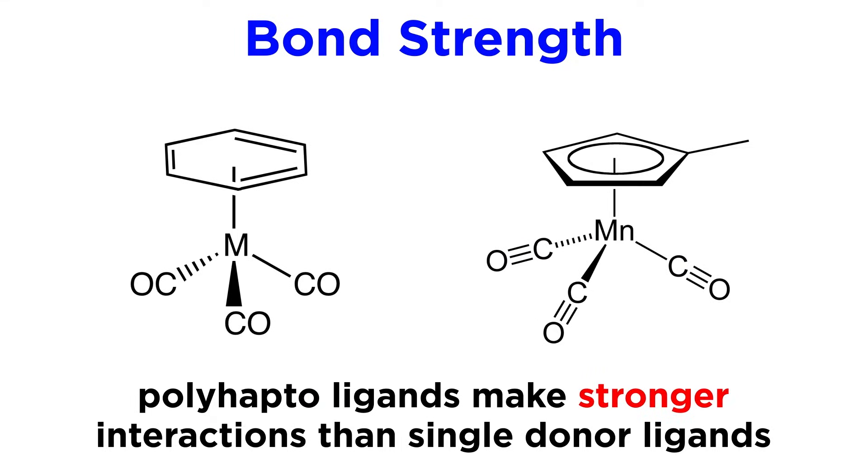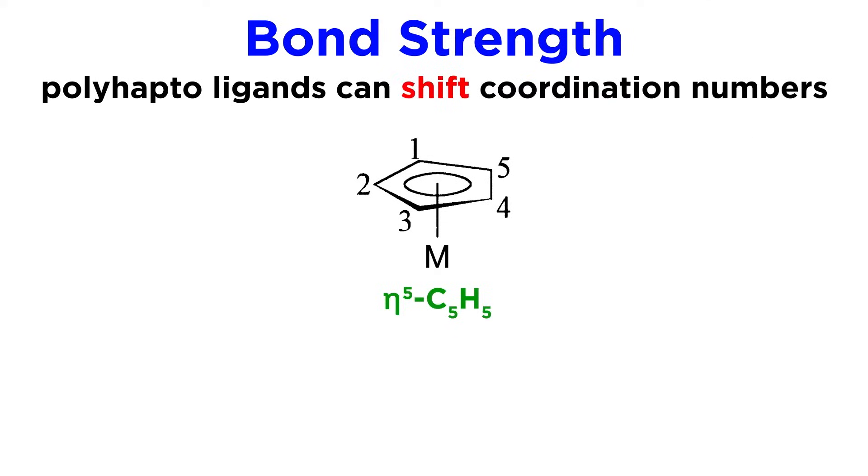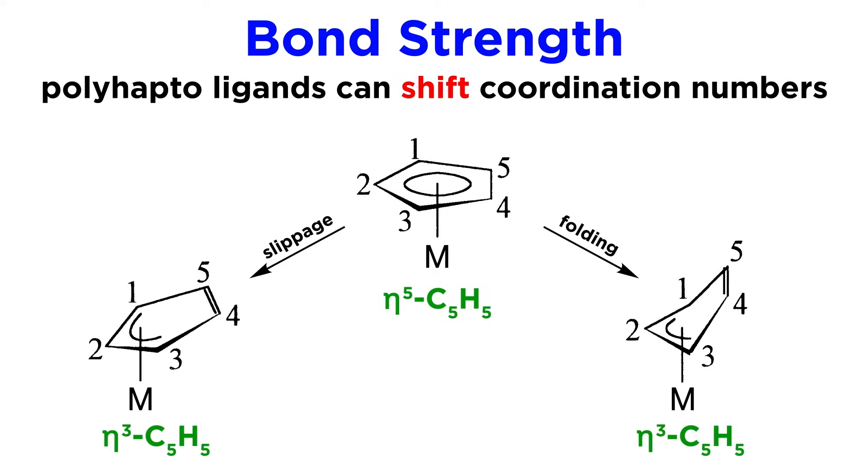In addition, polyhapto ligands like benzene or the cyclopentadienyl anion make stronger interactions than single donor ligands like amines. In addition, certain polyhapto ligands can shift from an eta5 coordination to eta3 coordination, which leaves two fewer electrons coordinated to the metal and opens up a coordination site for a new ligand. So this slippage phenomenon is another interesting way a complex can be primed for ligand exchange.